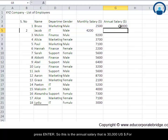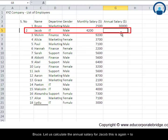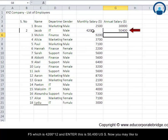So this is the annual salary that is 30000 US dollars for Bruce. Let us calculate the annual salary for Jacob. This is again equal to F5 which is 4200 multiplied by 12 and enter. This is 50400 US dollars.